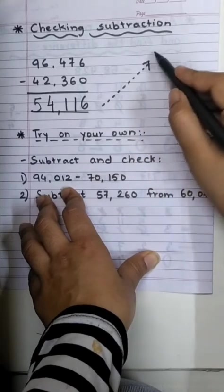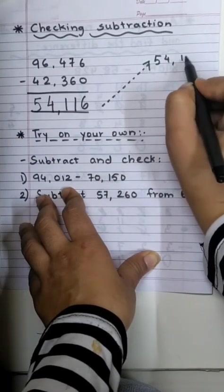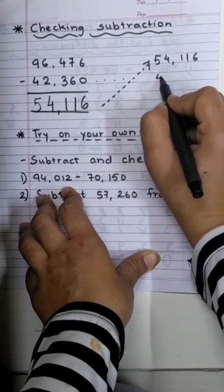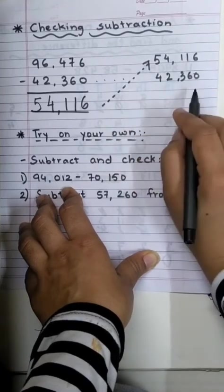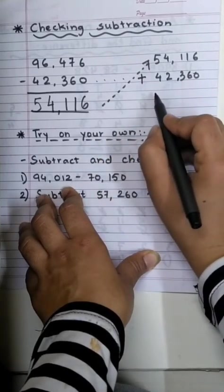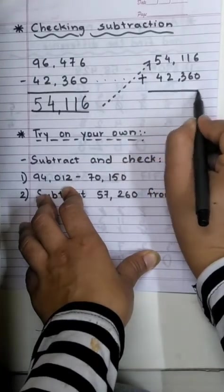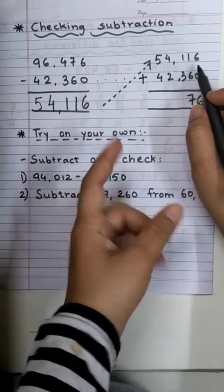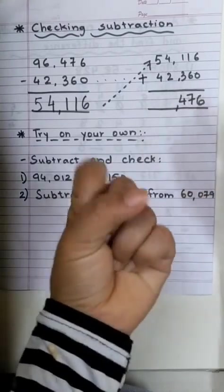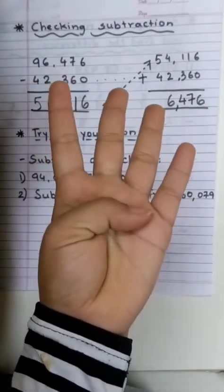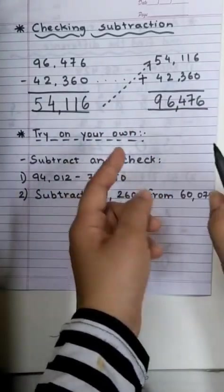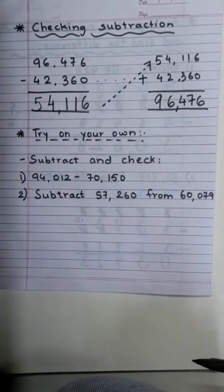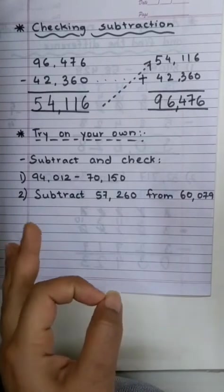Now, to check, we will place this number up. 54,116. The difference goes up. We will copy this number here. Now, what we will do is add these two numbers. Let's start adding. 6 plus 0 is 6. 1 plus 6 is 7. 1 plus 3 is 4. 2 plus 4 is 6. And 4 plus 5 is 9. As you can see, both these numbers are same. 96,476. So, this shows that your answer is correct.